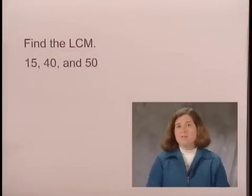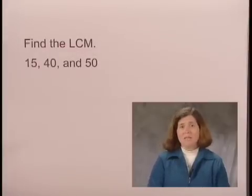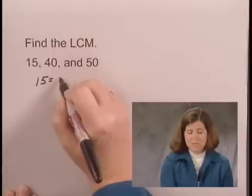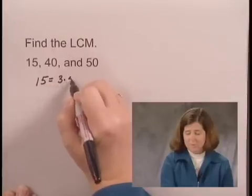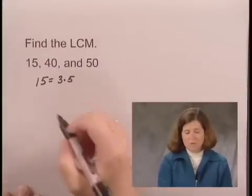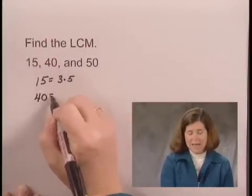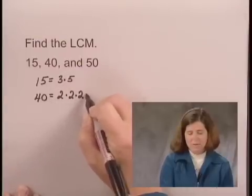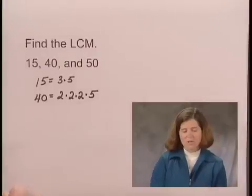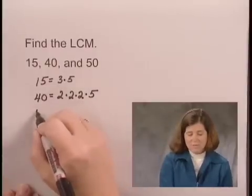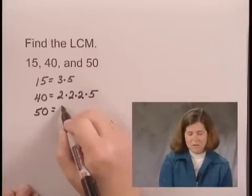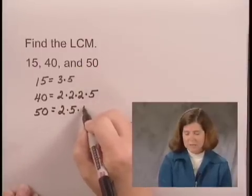We'll use the prime factorizations of each number to find the least common multiple. The prime factorization of 15 is 3 times 5. The prime factorization of 40: 40 is 8 times 5, and 8 is 2 times 2 times 2, so the prime factorization of 40 is 2 times 2 times 2 times 5. The prime factorization of 50, since 50 is 2 times 25, is 2 times 5 times 5.